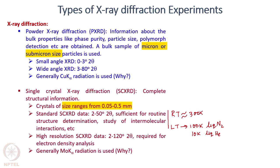If we need further information beyond just the structure solution — if we want to know the electron density distribution in a molecule, identify the hydrogen bonds, model the intermolecular interaction regions, and determine how two molecules are interacting — we need high resolution single crystal data. In that case, the data we collect has a much wider range from 2 to 120 degrees in 2θ, which is required for electron density analysis. In general, we use Mo Kα or nowadays silver Kα radiation. By lowering the wavelength, we can achieve much higher resolution in X-ray diffraction data.